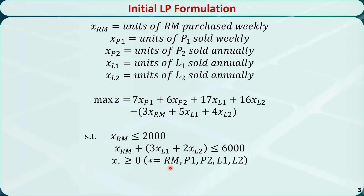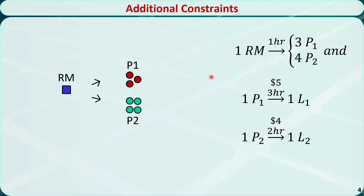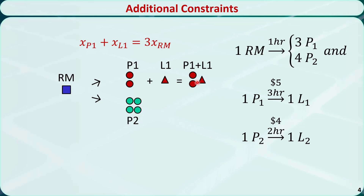This is the initial formulation. Is this formulation complete? No, we still have some important relations that are not considered yet. Each unit of raw material yields 3 units of product 1 and 4 units of product 2. If we decide to further process one unit of product 1, we get one unit of luxury product 1, but the sum of product 1 sold and luxury product 1 is still 3 times the raw material.